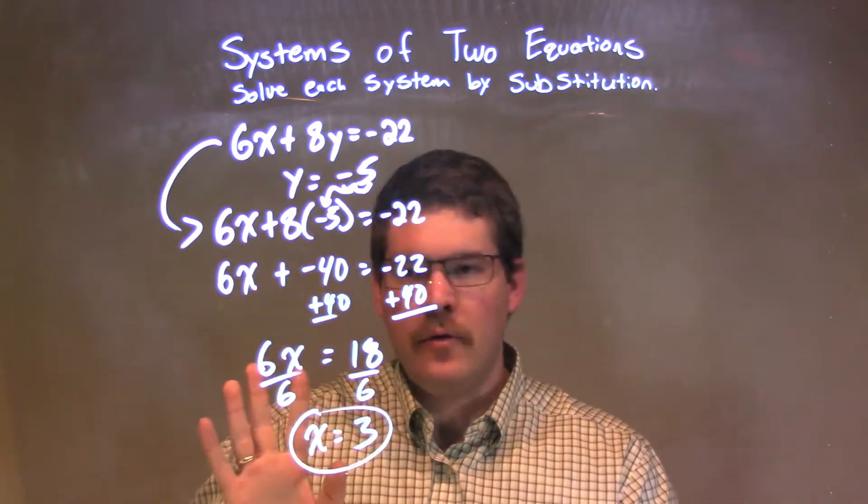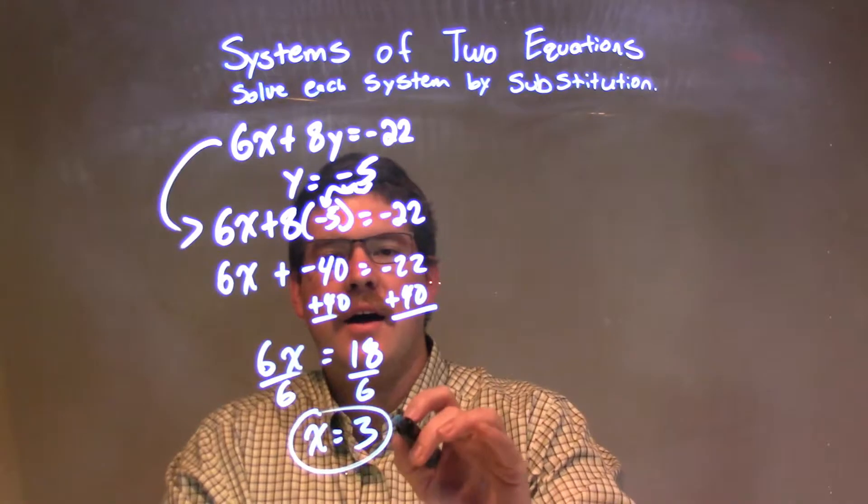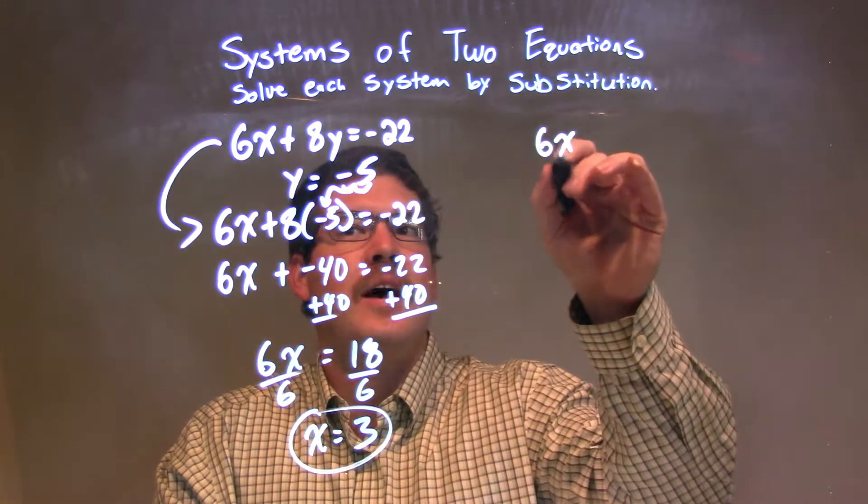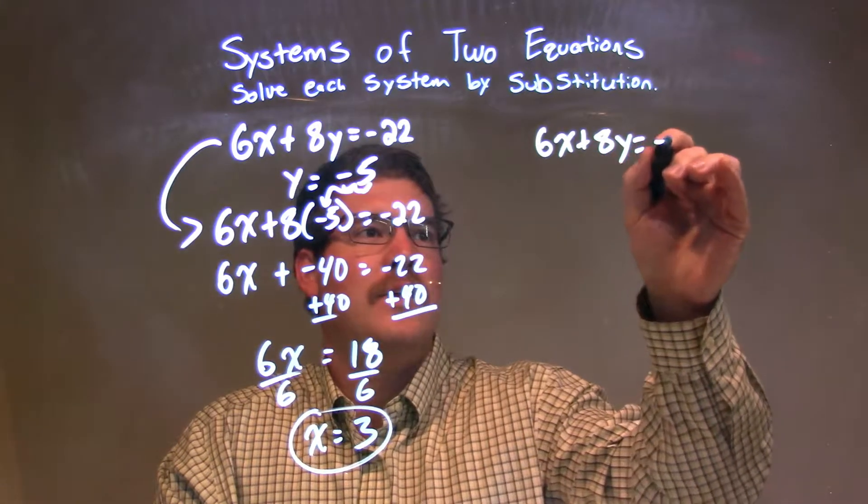But if we must, let's go plug into our first equation to verify. So, 6x plus 8y equals negative 22.